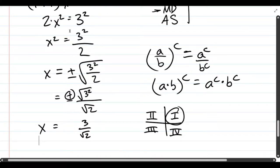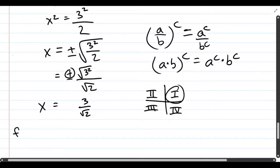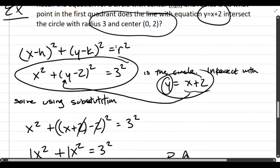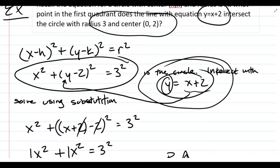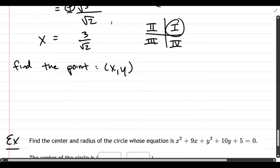I need to find the point, which is an (x, y) value pair or ordered pair. Our x is 3/√2. We can use either of these equations. The easiest equation is y = x + 2, so we're going to use that. Our x value is 3/√2, and that's all we need to do to get the y-value, then we'll put them together.